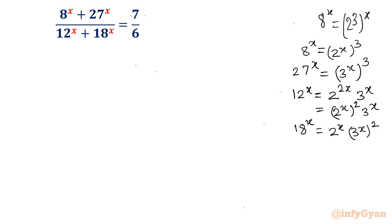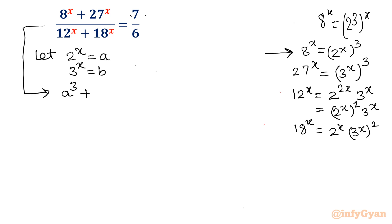Now let us consider 2 raised to the power x equal to a, and 3 raised to the power x equal to b. So the equation will convert as: 8 power x is 2 power x whole cube, so it becomes a cubed. 27 power x is 3 power x whole cube, so it becomes b cubed. 12 power x becomes a squared times b, and 18 power x becomes a times b squared. So the equation is a cubed plus b cubed over a squared b plus a b squared, equal to 7 over 6.